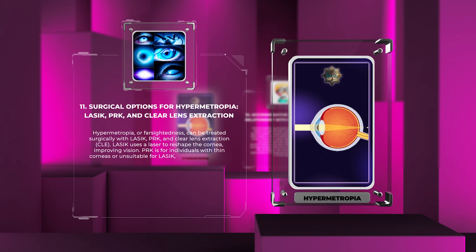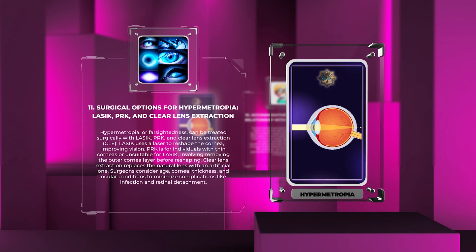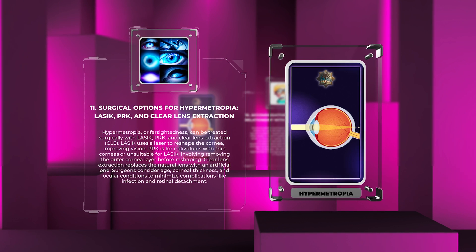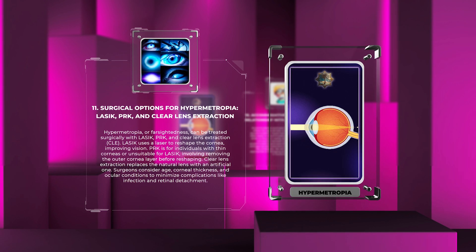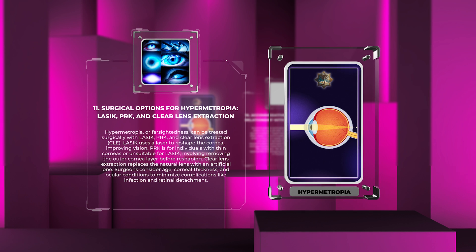Hypermetropia, or farsightedness, can be treated surgically with LASIK, PRK, and clear lens extraction. LASIK uses a laser to reshape the cornea, improving vision. PRK is for individuals with thin corneas or those unsuitable for LASIK, involving removing the outer cornea layer before reshaping. Clear lens extraction replaces the natural lens with an artificial one. Surgeons consider age, corneal thickness, and ocular conditions to minimize complications like infection and retinal detachment.